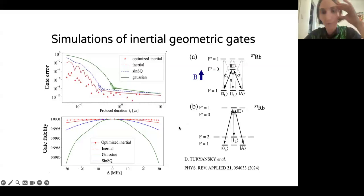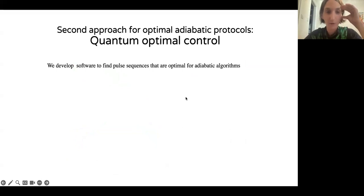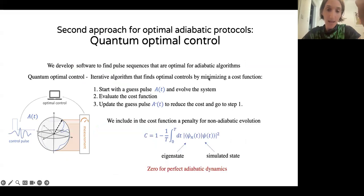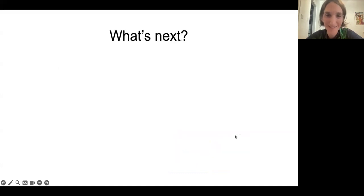We showed an implementation with rubidium atoms. I think I ran out of time. I'll just mention that we're also working on developing software, quantum optimal control software that is specifically suited for improving adiabatic algorithms. We do this by basically looking for pulses that are optimally adiabatic in the sense that the projection of the simulated state on the instantaneous eigenstate is as large as possible. The overlap is as large as possible. In this way, we can find pulses that are fast and robust.